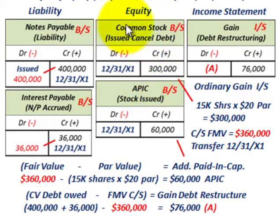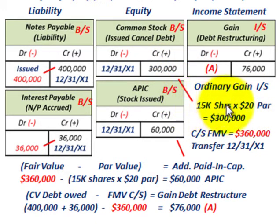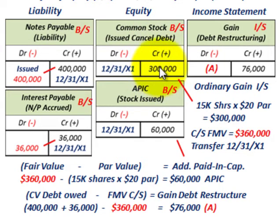Now let's look at the equity side. Common stock is an equity account on the balance sheet. For common stock, they credit it for $300,000 — that's simply the $20 par value times the 15,000 shares being issued to Bank B, which equals $300,000.